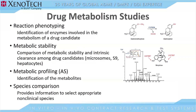So just a brief overview of some of our drug metabolism study types. We offer reaction phenotyping, which is used to identify the enzymes that are involved in the metabolism of the drug. Metabolic stability, which is a comparison of the metabolic stability and intrinsic clearance among drug candidates. Metabolic profiling and MetID, which is identification of the metabolites. And also species comparison, in that all these study types can be conducted using test systems from various species in order to select the appropriate non-clinical species for future work.